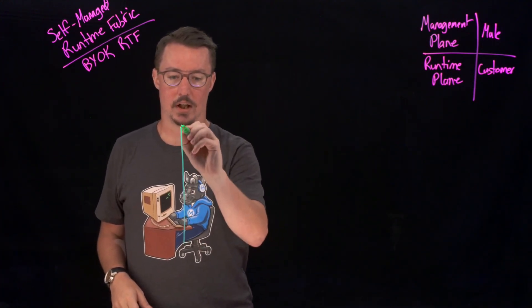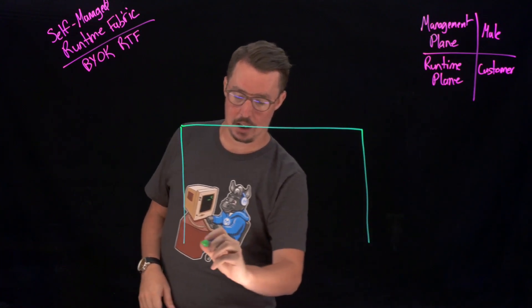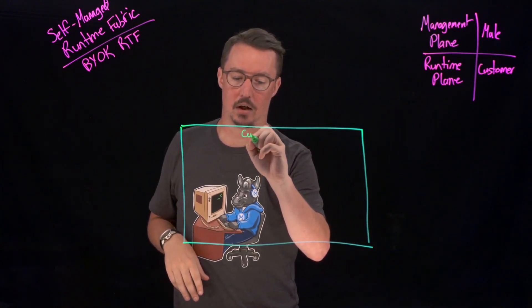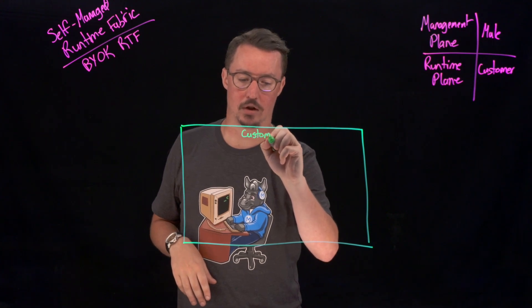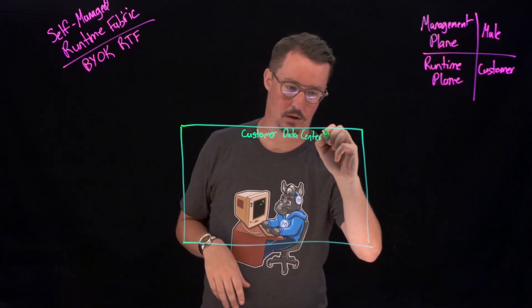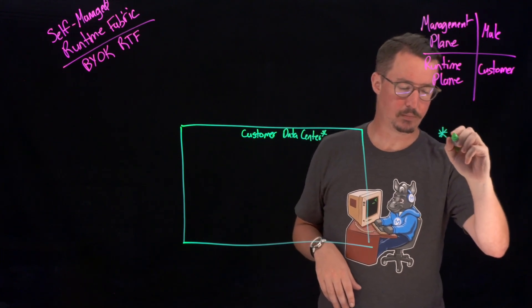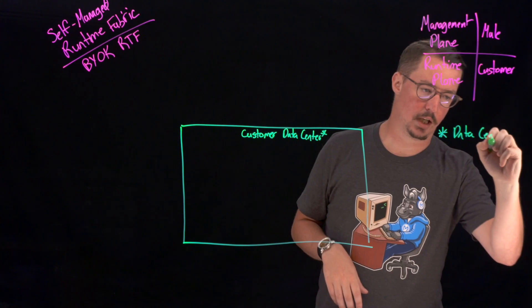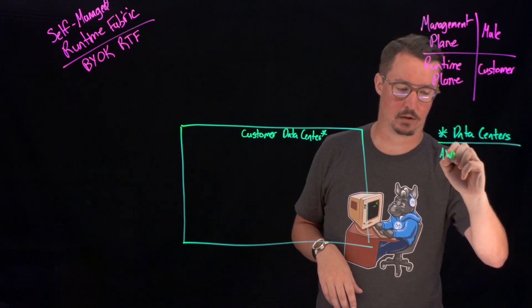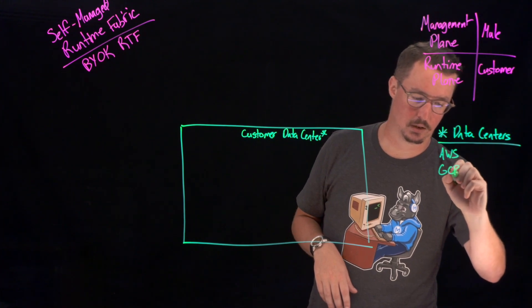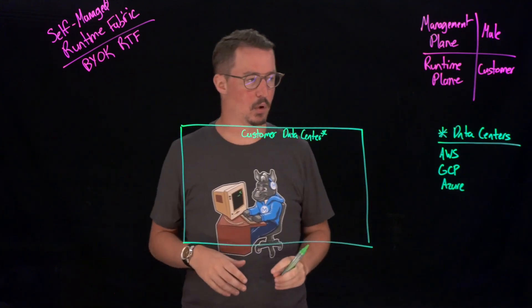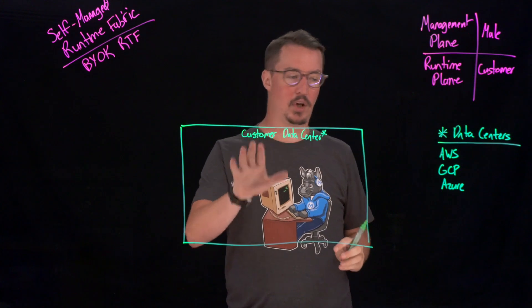We'll start off with our customer data center. One thing to note is that right now, we allow this customer data center to be deployed in three different locations. Our data centers for this are either going to be AWS, GCP, or Azure. In the future, there are plans to expand this to other hosts, but for right now, these are the three that we allow.